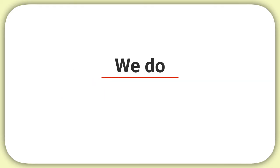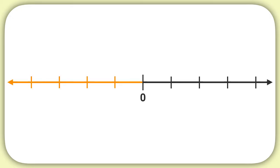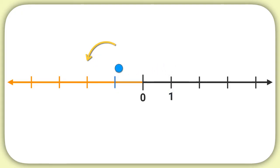Let's look at one of these together. Here's a number line. We'll mark 1 here, and let's figure out what this dash represents. Well, if I start at 0, we can see when I move one dash, I'm moving a distance of 1. So if I move one dash backwards, what dash am I at now?